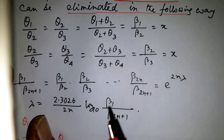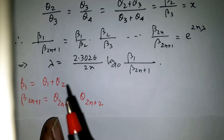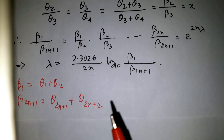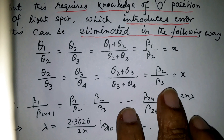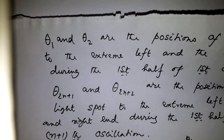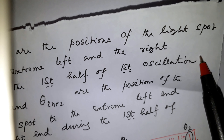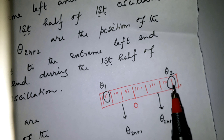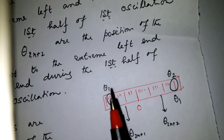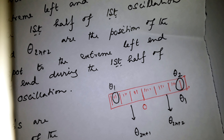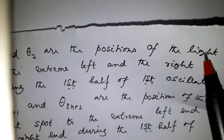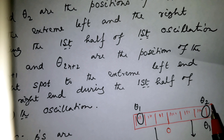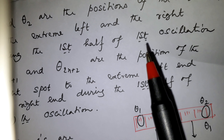Taking log, lambda equals (1/2n) times log of (beta_1/beta_(2n+1)), where beta_1 equals theta_1 plus theta_2, and beta_(2n+1) equals theta_(2n+1) plus theta_(2n+2). Theta_1 and theta_2 are the positions of the light spot at extreme left and right during the first half of the first oscillation.